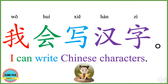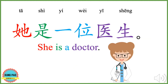我会写汉字。 我 means I or me. 会 means can or be able to. 写 means to write. 汉字 means Chinese characters. I can write Chinese characters. 一位 means one. 一生 means doctor.